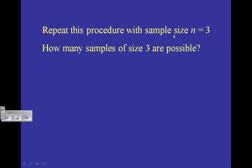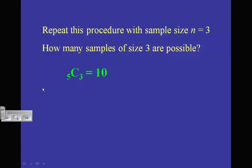What if we repeat this procedure with a sample size of n equals 3? We would have 5C3, and once again there are 10 possibilities. You can use your calculator to verify that 5C3 equals 10.